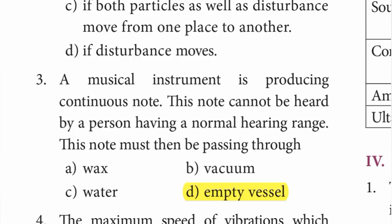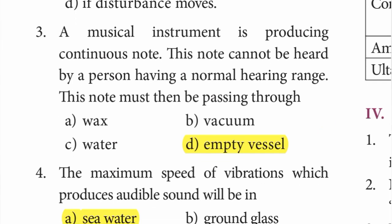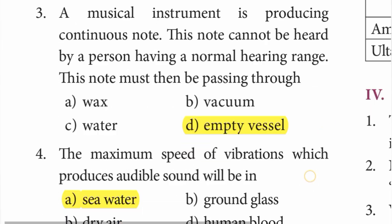Question 3: A musical instrument is producing a continuous note. This note cannot be heard by a person having a normal hearing range. This note must then be passing through an empty whistle. Answer: option D — empty whistle.